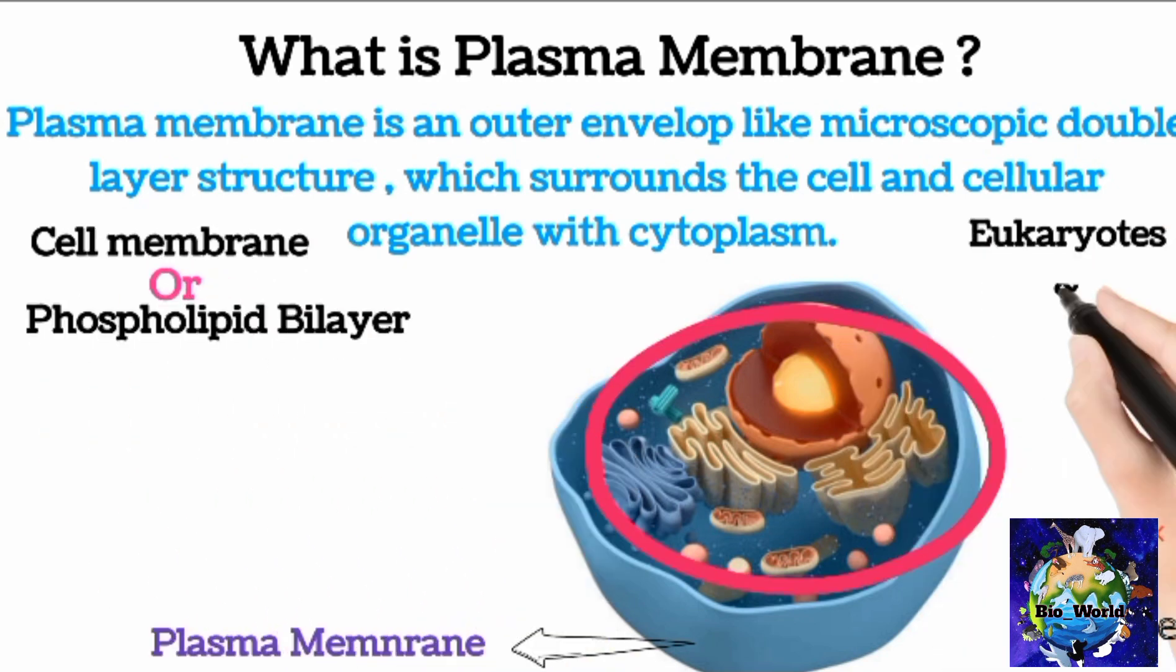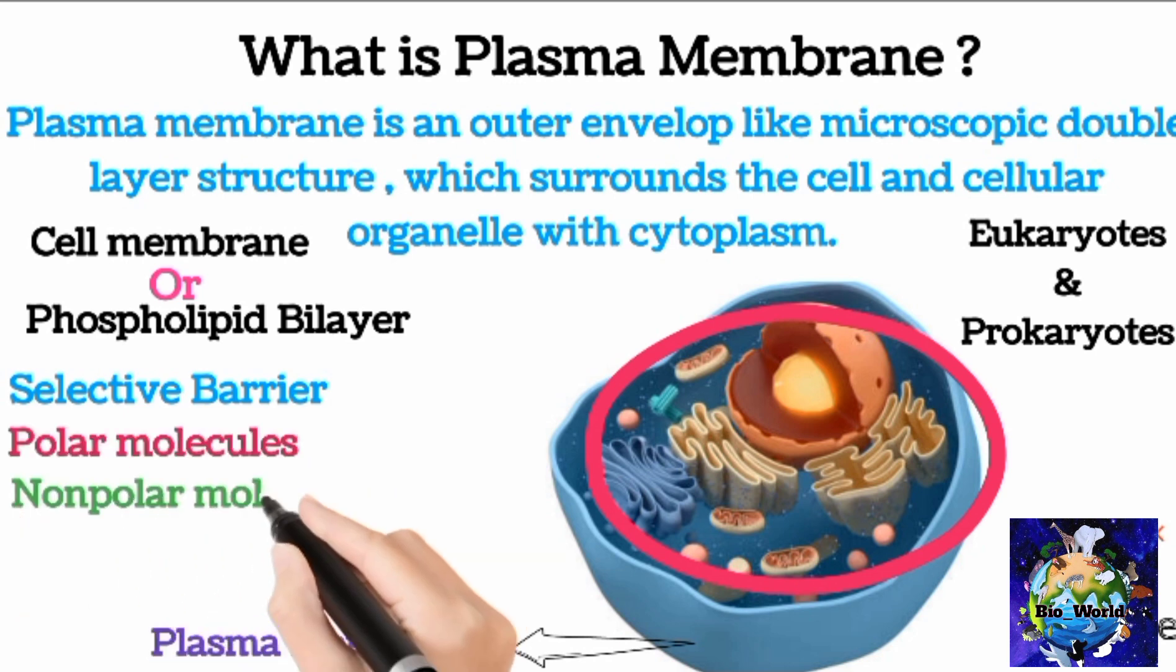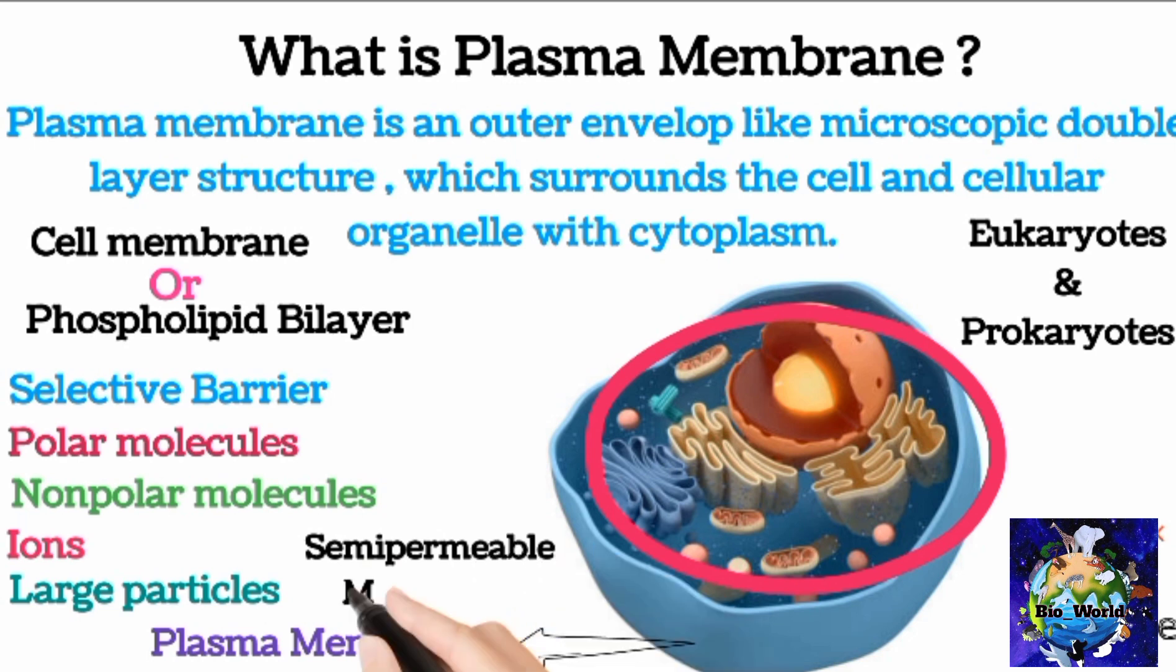It is also called cell membrane or phospholipid bilayer and is present in both eukaryotes and prokaryotes organisms. In all living cells it works as a selective barrier that allows some things to pass through but stops others, such things may be polar molecules, non-polar molecules, ions, or other ligands and small particles. Therefore we can call it a semi-permeable membrane also.